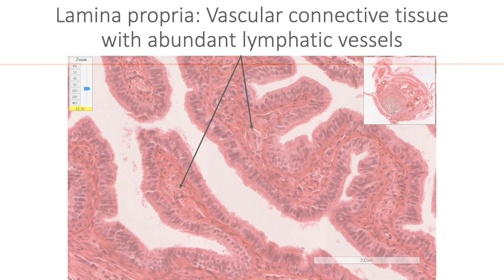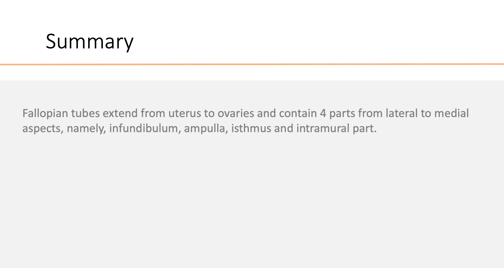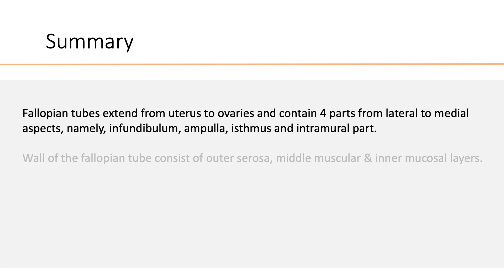Quickly recalling what we have seen so far: fallopian tubes extend from the uterus to the ovaries and contain four parts from lateral to medial aspects, namely infundibulum, ampulla, isthmus, and intramural parts. The wall of the fallopian tube consists of an outer serosa, middle muscular, and inner mucosal layers.